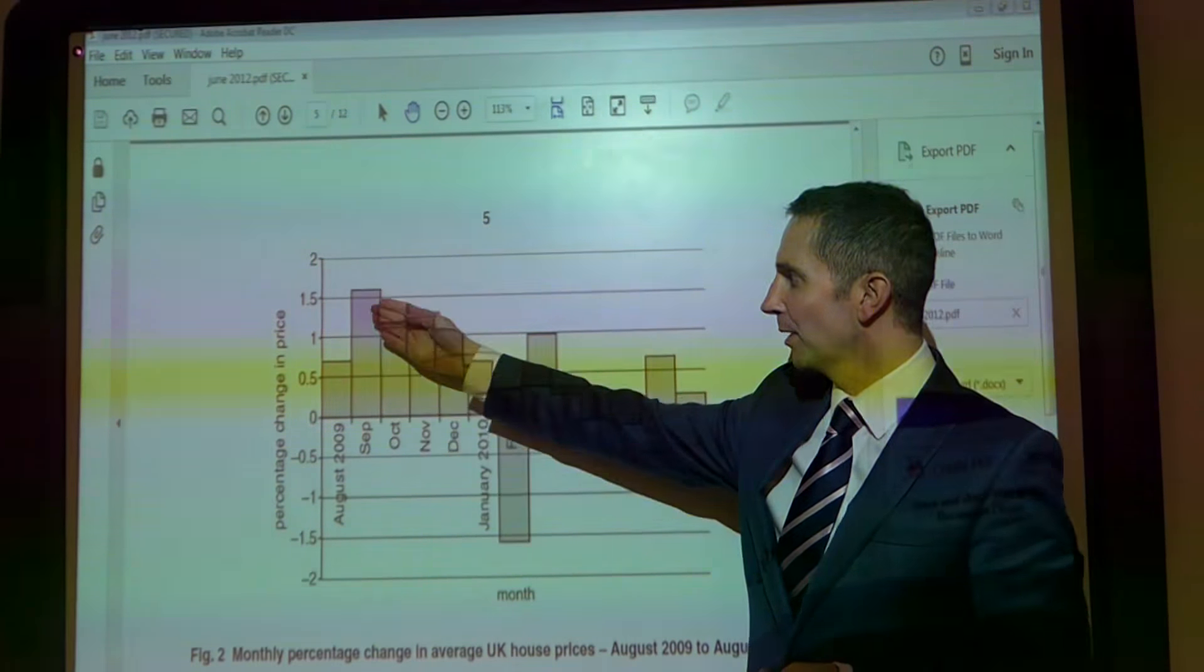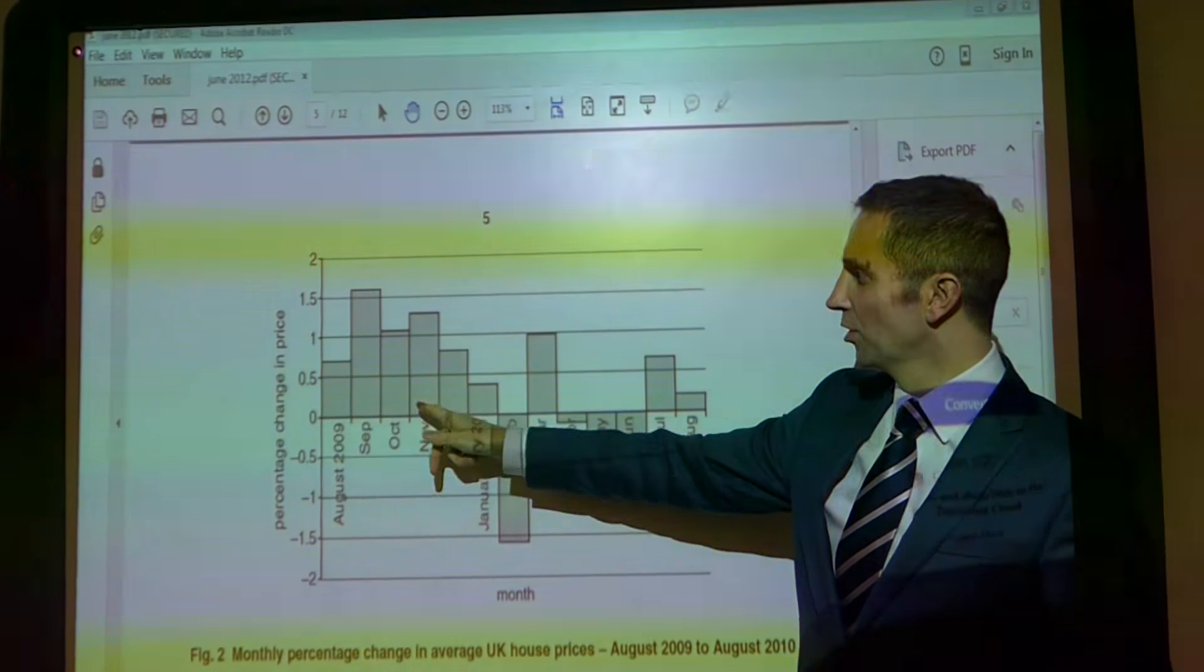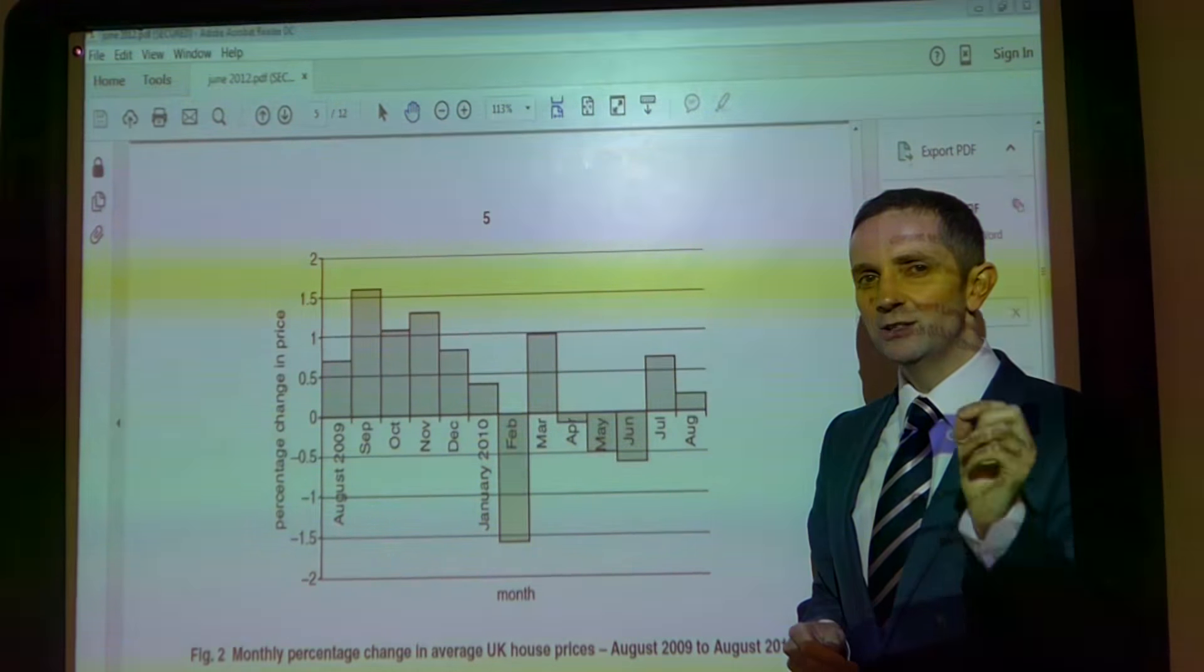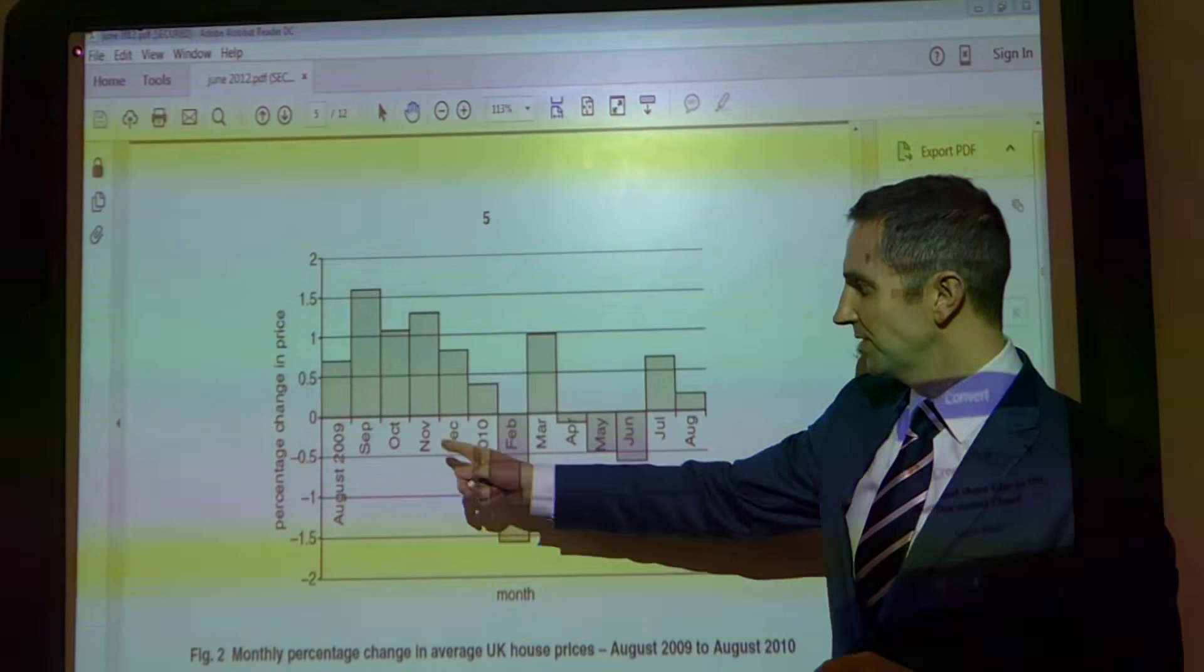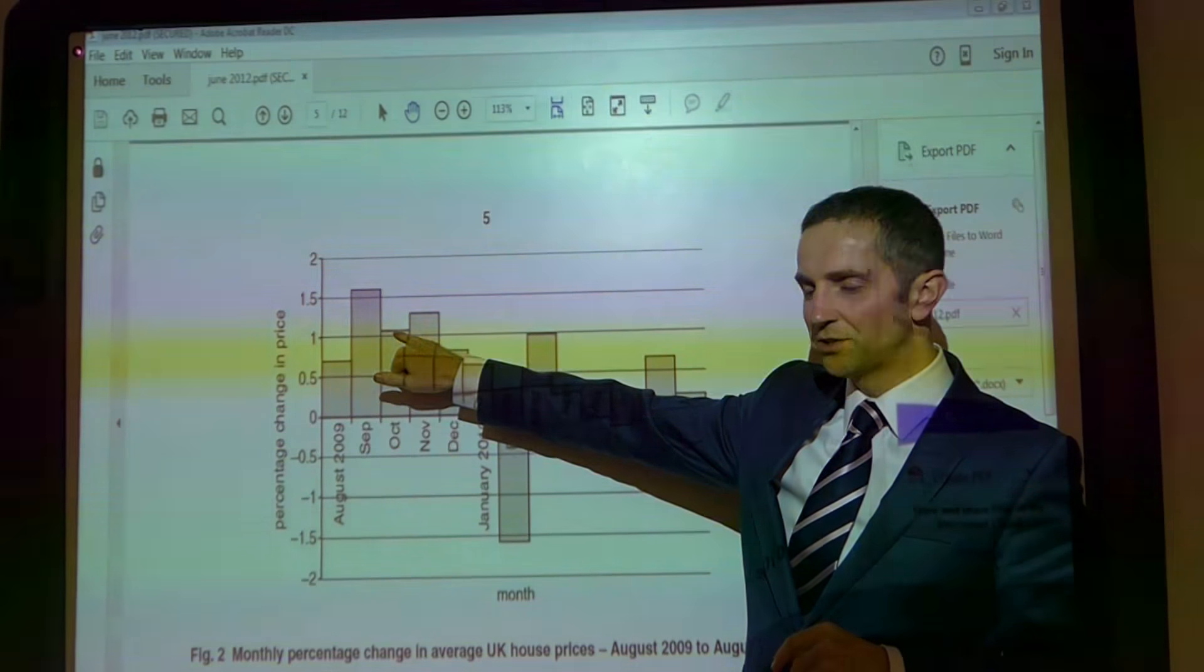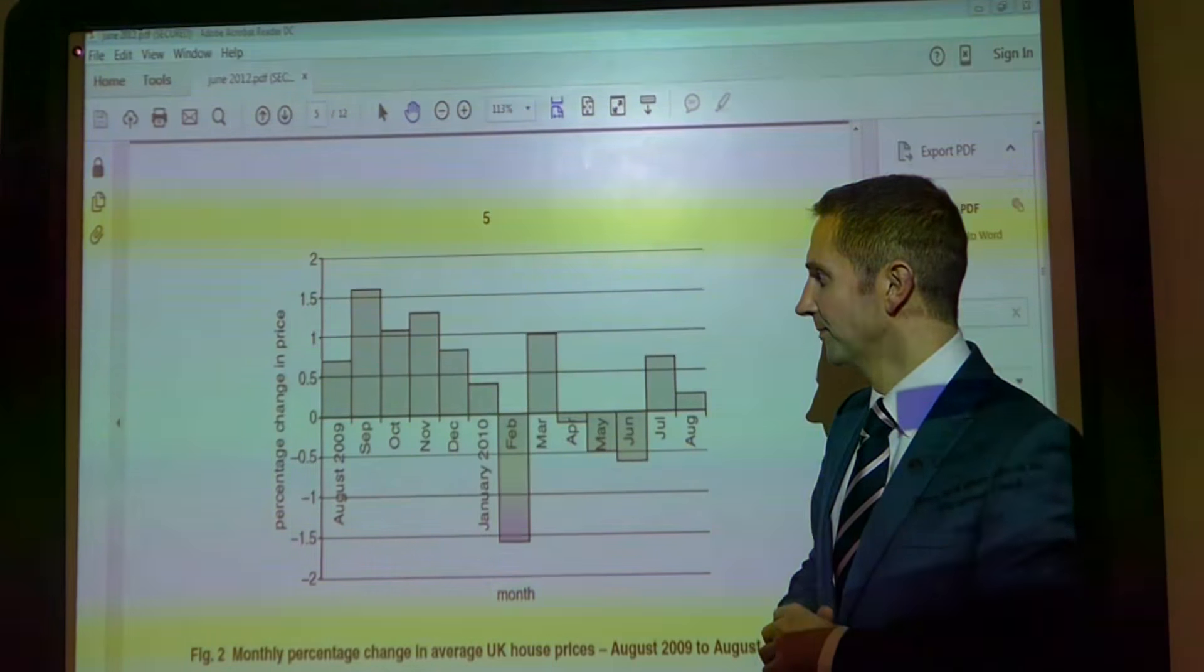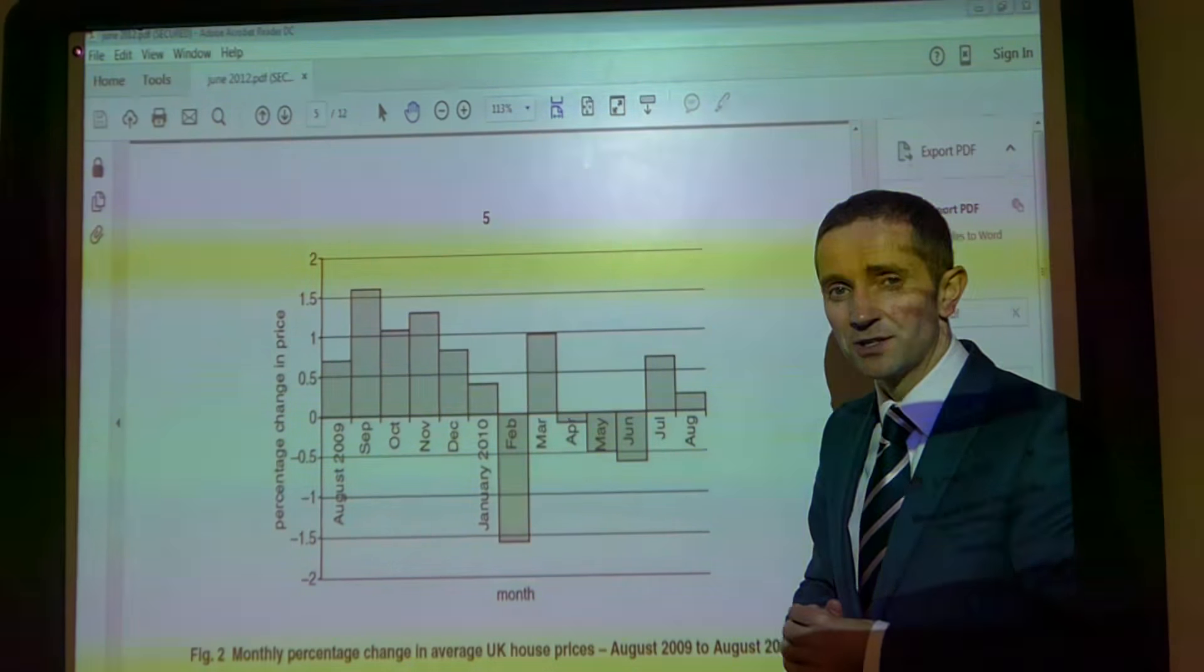prices have gone up by around about 0.6 to 0.7%. In September, prices going up by 1.6%. In October, prices going up by 1.1%. Now the key trap which people fall into is this. They see September at 1.6%